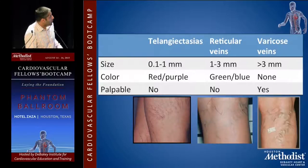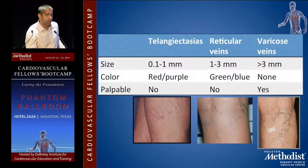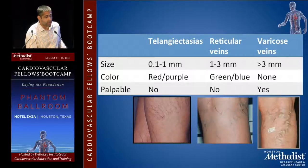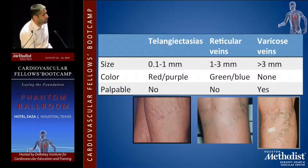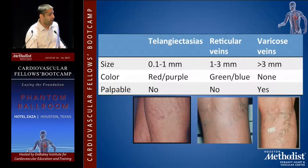Telangiectasias are 0.1 to 1 millimeter in size, red and purple in color, and not really palpable. Reticular veins are 1 to 3 millimeters in diameter, greenish-blue discoloration, and also not palpable. Varicose veins are greater than 3 millimeters, usually not discolored, and generally are palpable.